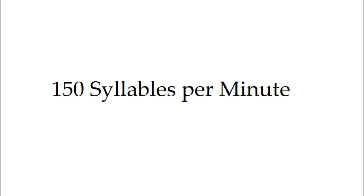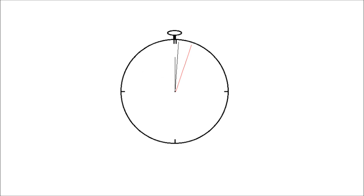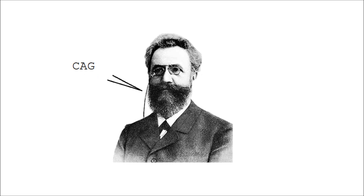To measure the time, Ebbinghaus first used a metronome, but he later switched to a watch, since its ticking was less distracting. Third, Ebbinghaus read the words without any inflection. Because he knew it would be hard to talk in a monotone voice for a long period of time, Ebbinghaus allowed himself to place a slight inflection on either every third or every fourth syllable in a series, depending on the experiment.